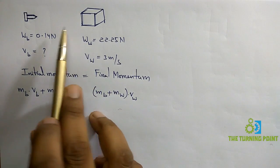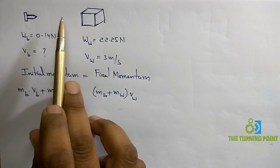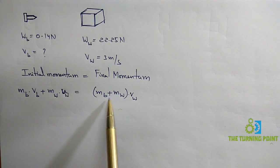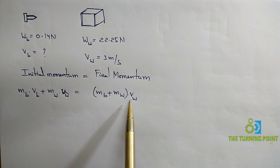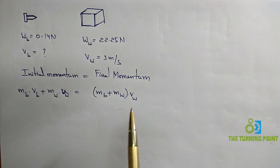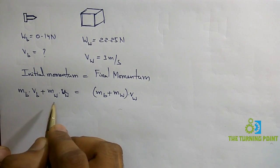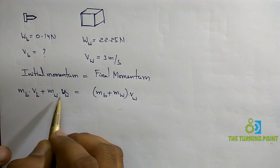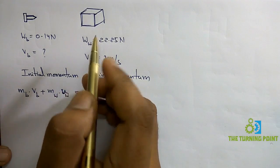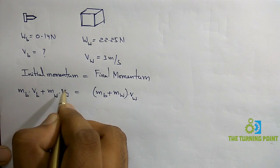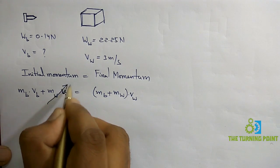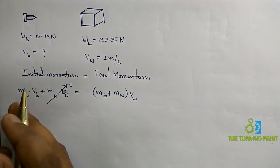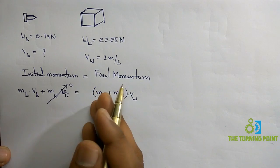In the final case, the block is hit by the bullet and the bullet stays in the block, so we consider the combination of both masses moving with the velocity of the wooden block. For initial momentum, we only consider the bullet's momentum because the block is at rest — its initial velocity is zero, so its momentum is zero. Therefore, initial momentum of bullet equals final momentum of bullet and block combined.